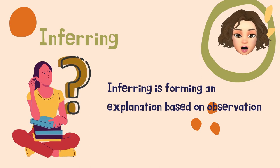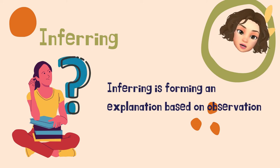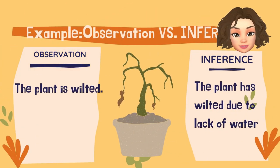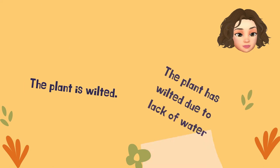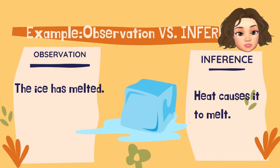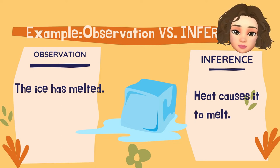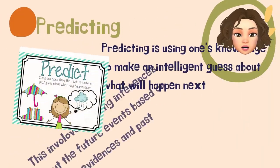Next would be inferring. Inferring is forming an explanation based on observation. What is the difference between observation and inference? In observation, we can say that the plant is wilted. To explain what we have observed, we think that the plant has wilted due to lack of water. Same thing with this ice — the ice has melted because we think that the one that causes it to melt would be heat. And that would be the explanation from our observation.